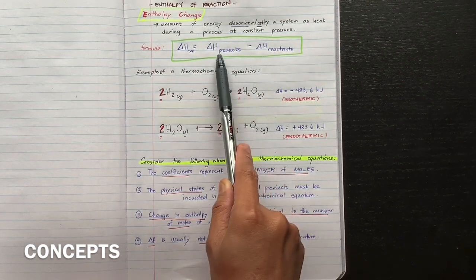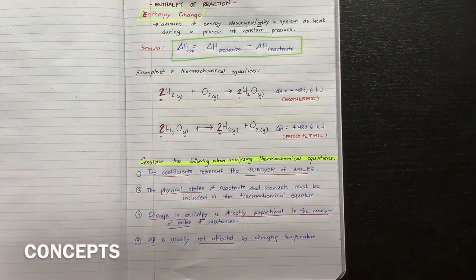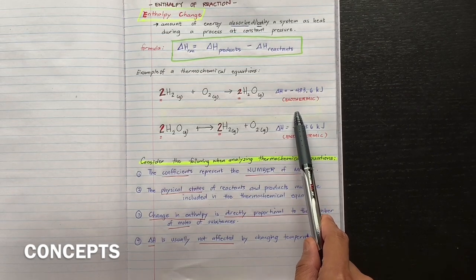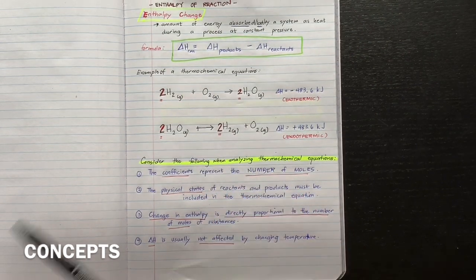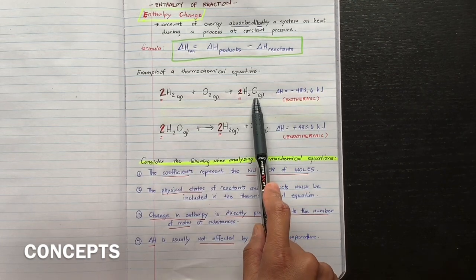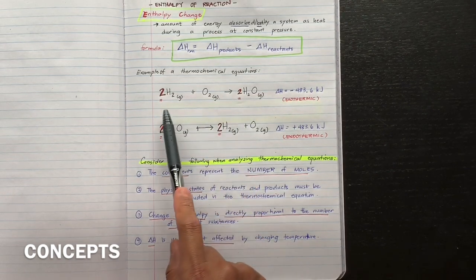To get the delta H of the reaction, we simply subtract products minus reactants — final minus initial. We represent enthalpy through a chemical equation. The balanced chemical equation that shows the associated enthalpy change is what we call a thermochemical equation. A thermochemical equation is simply a balanced chemical equation.